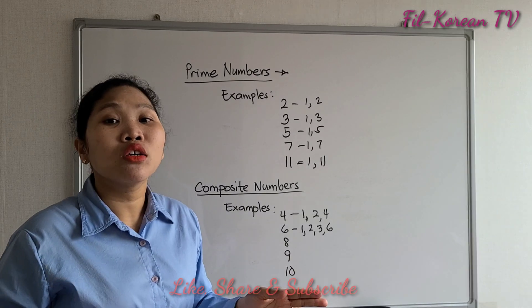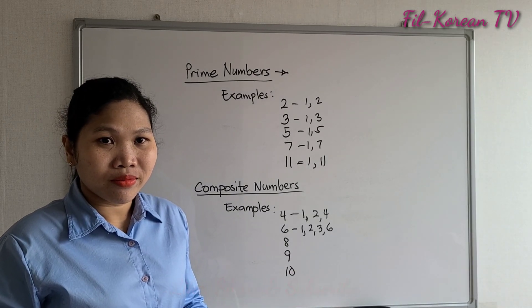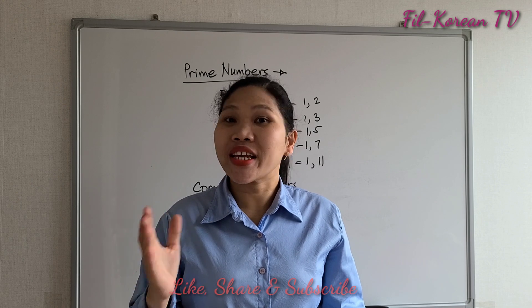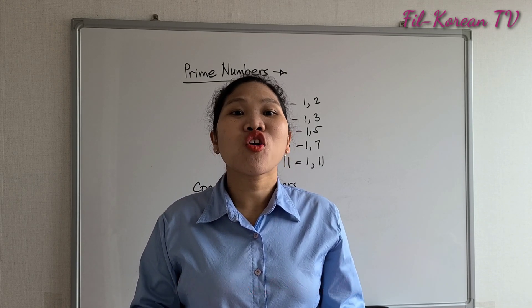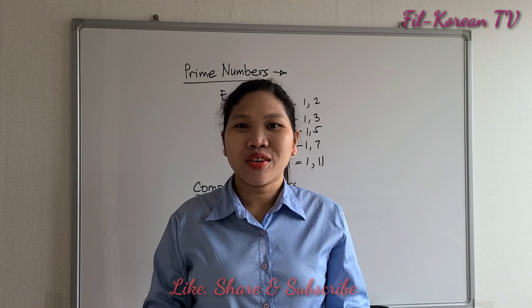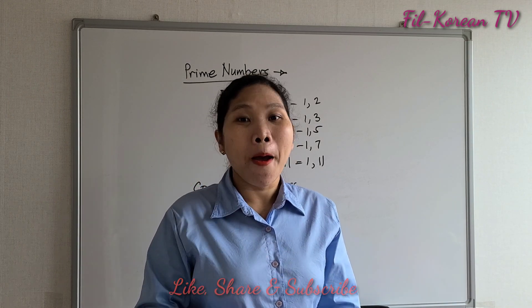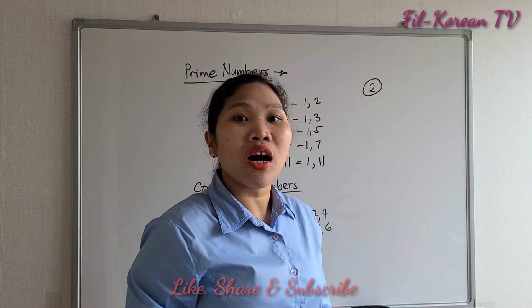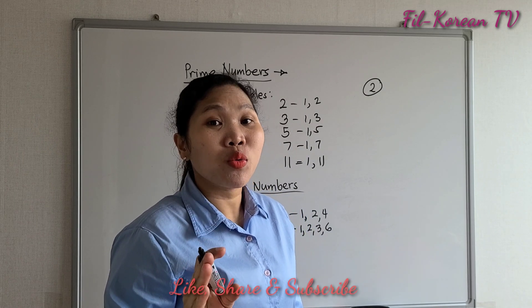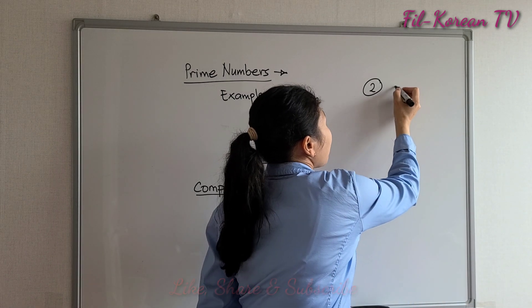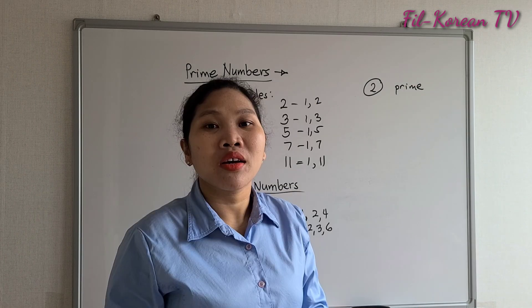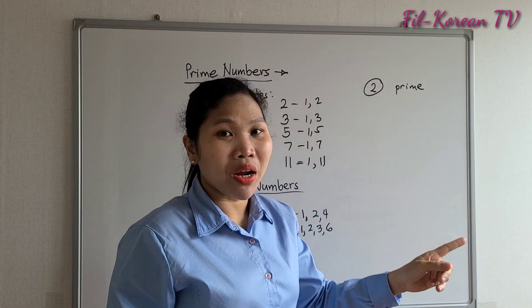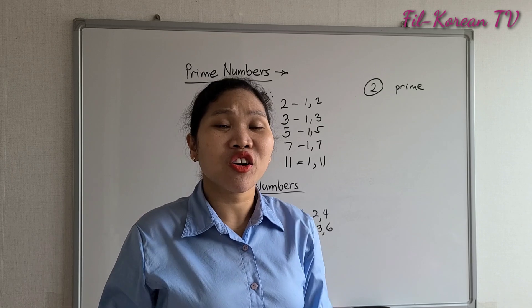Just keep this in your mind: all even numbers except two are composite numbers. Because two is the only even number which is prime. Two is the smallest prime number. Only even number which is prime is two. All other even numbers are composite numbers.